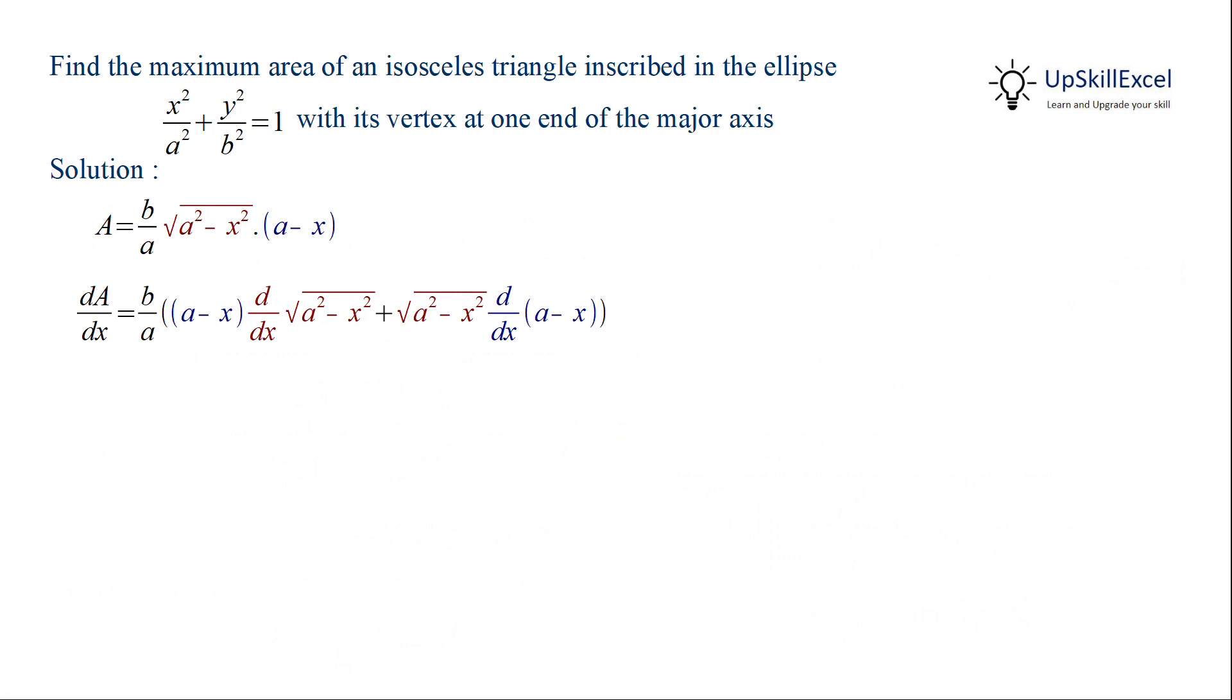Now we know that derivative of √(a² - x²) is half of 1 over √(a² - x²) multiply by -2x. The -2x comes from the chain rule by differentiating -x². Similarly derivative of a - x is equal to -1.